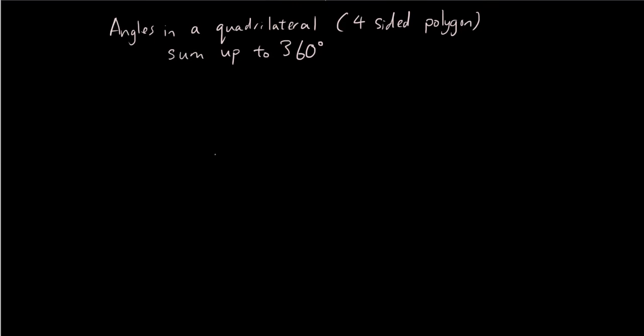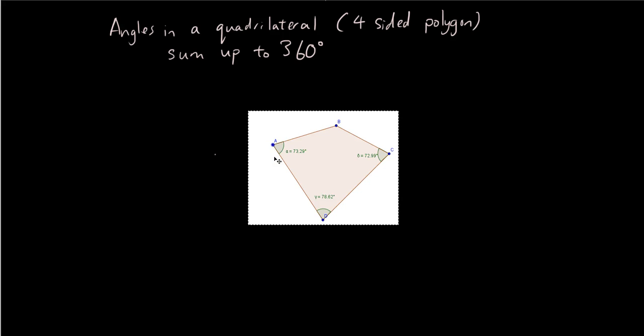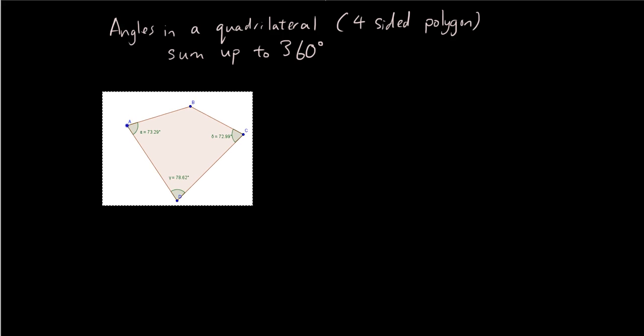so I'll copy this shape into my smooth draw app. So angles in the quadrilateral sum up to 360 degrees. And let's say I have this shape here, and I have an unknown angle called x. And the question says, find the size of angle x.